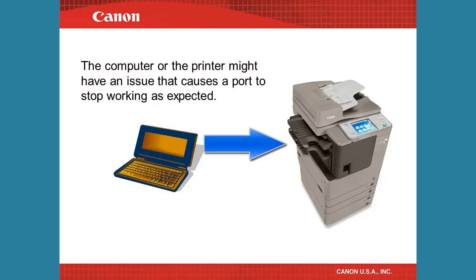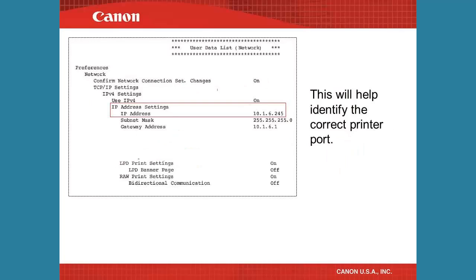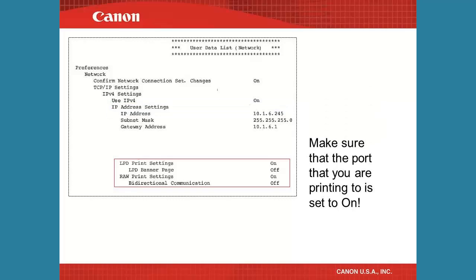It will help if you know what the printer's IP address is, especially if there are a lot of printers installed on the computer. Print the user data list from the operation panel of the printer — this will show the IP address. It also shows the LPD print settings and the RAW print settings. Both are on by default, but verify that the port you are printing to has the setting on.